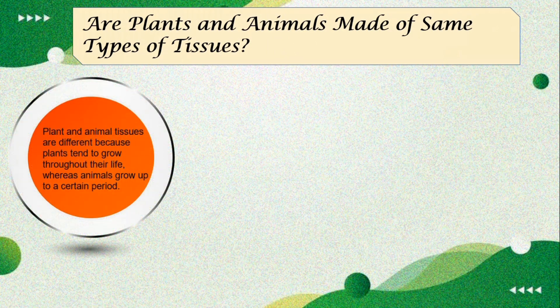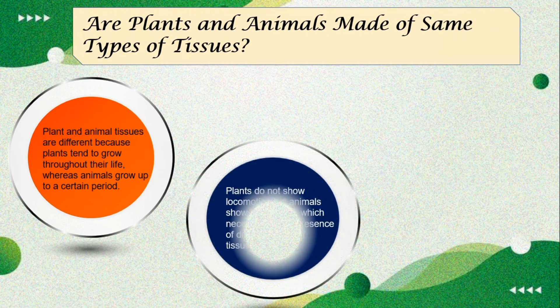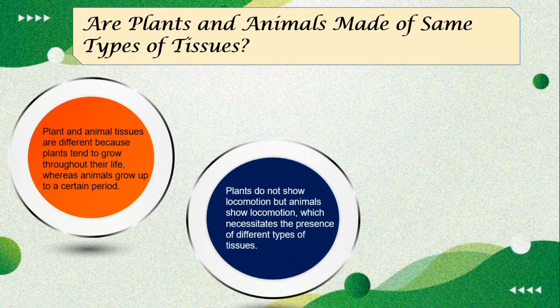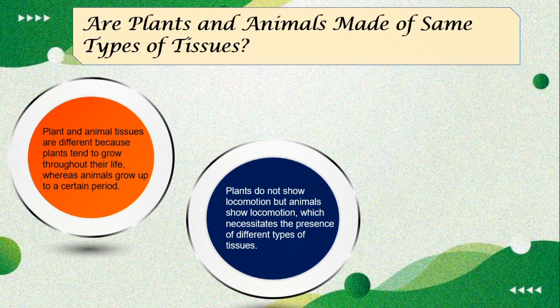Are plants and animals made of the same types of tissues? No. The first difference is that plants tend to grow throughout their life, but animals only grow up to a certain period. The second difference is that plants do not show locomotion. Locomotion is the ability to move, but animals move from one place to another, which we cannot see in the case of plants.